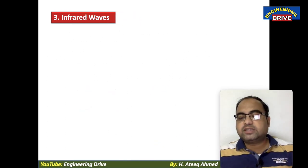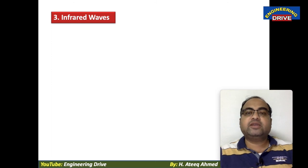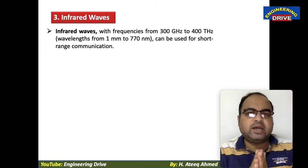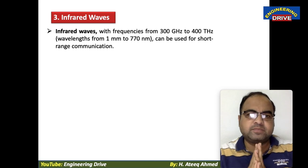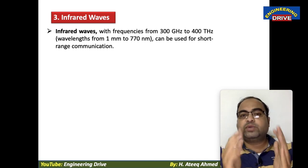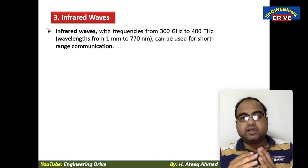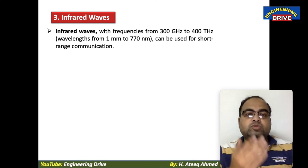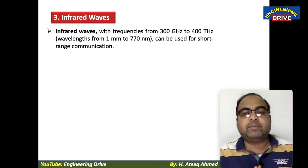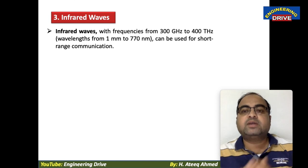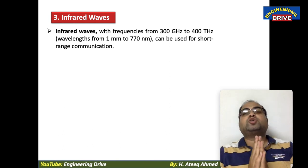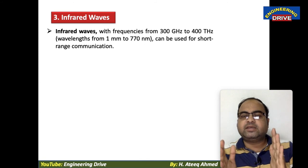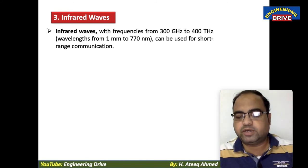The third unguided medium is infrared waves. Infrared waves have frequencies from 300 GHz to 400 THz, with wavelengths from 1 mm to 770 nm. They can be used for short-range communication, so if you want any short-range communication then infrared waves are preferred.